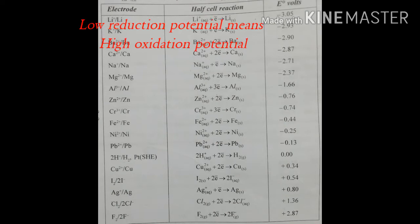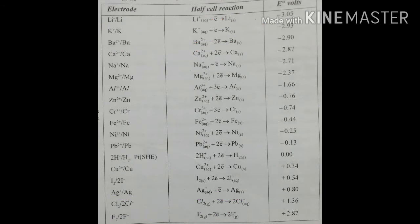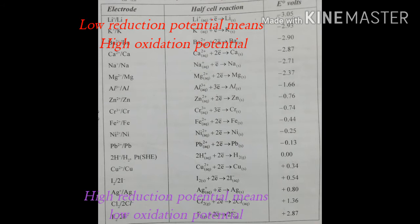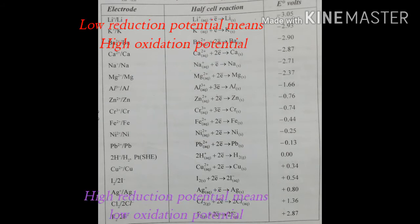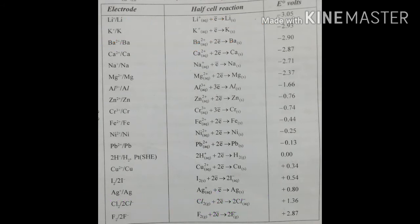The reduction potential is less than the oxidation potential in that electrode. The reduction potential is the opposite of the oxidation potential. If the reduction potential is less, then the oxidation potential is greater in that electrode.